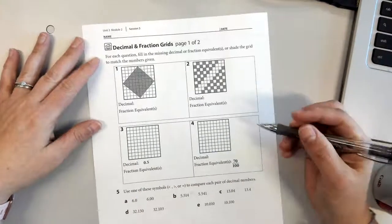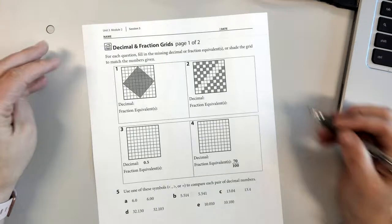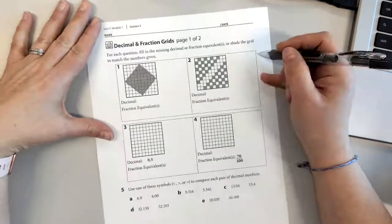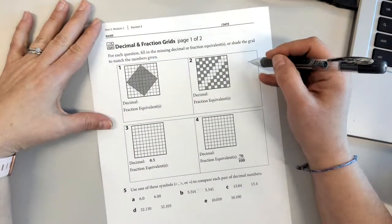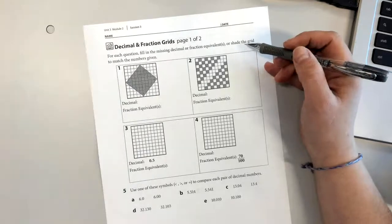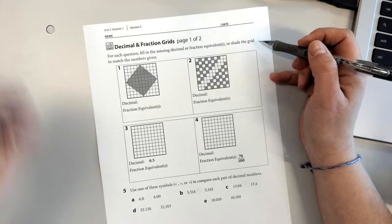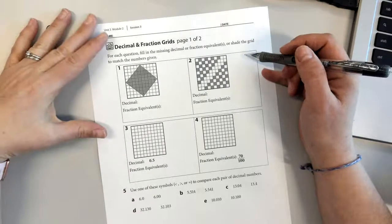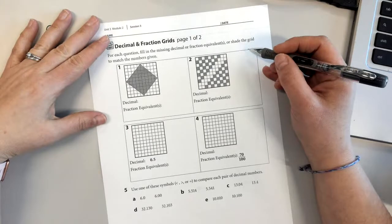All right, this is the video for decimal and fraction grids, the home connection with today's unit. For each question, fill in the missing decimal or fraction equivalent or shade the grid to match the numbers given, very similar to the last page that we did.